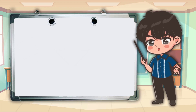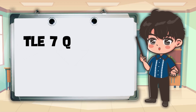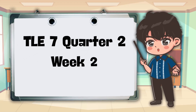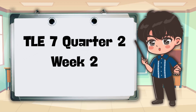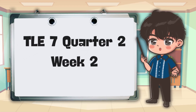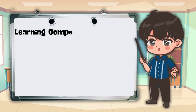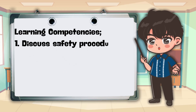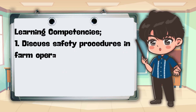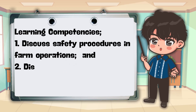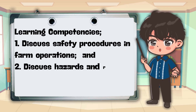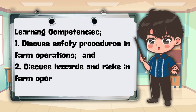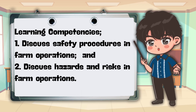Hello everyone, welcome to our TLE 7 class, quarter 2 week 2. This week we are going to discuss: 1. Safety procedures in farm operations, and 2. Hazards and risks in farm operations.